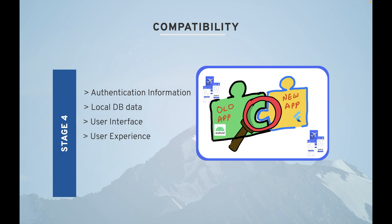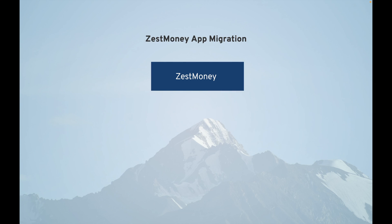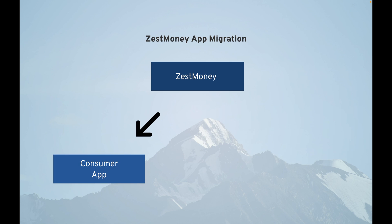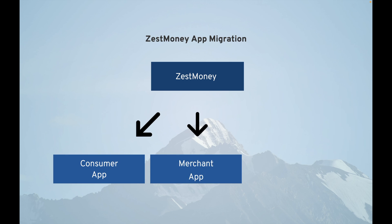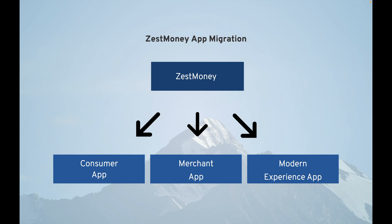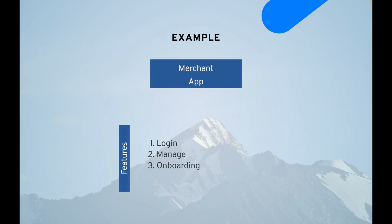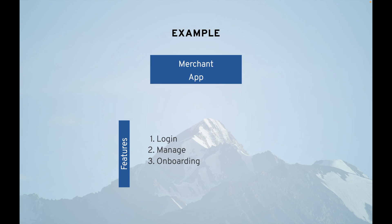Now I'm going to give you examples of how I chose migration approaches and what my stages were. I work at Zestmoney as mobile team lead. Let's say I have three applications: a consumer app, a merchant app, and a modern experience app. For the merchant app, I have three features: login, manage, and onboarding. These are simple features with simple UI and API calls, fewer than four features, so I can choose full conversion.